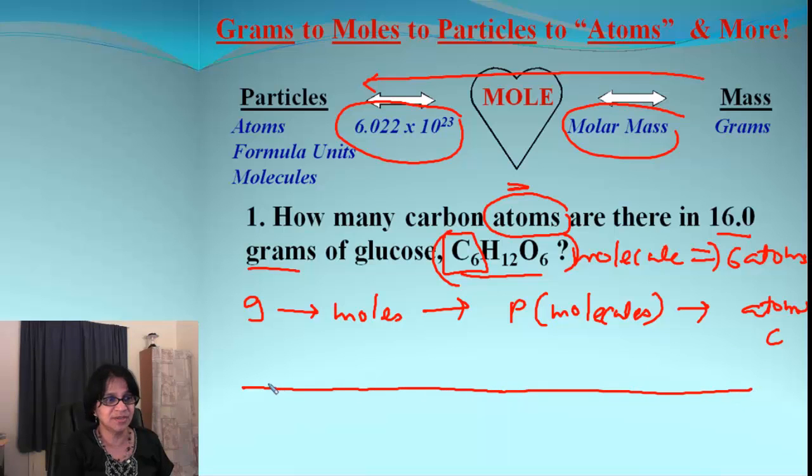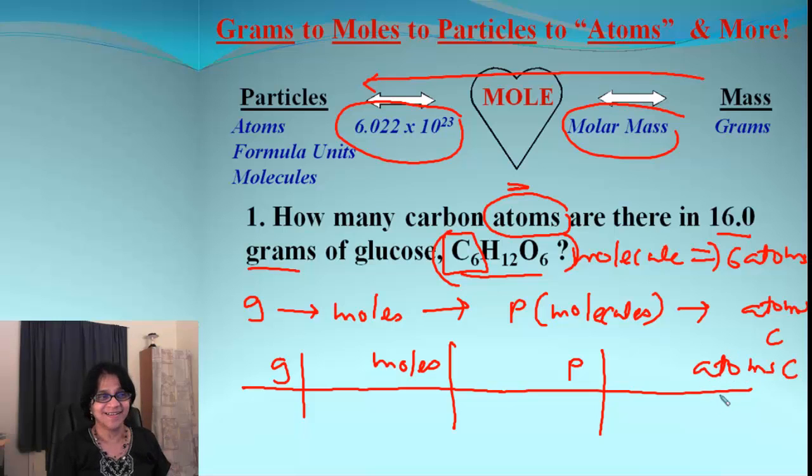So, let's put all that in our grid. That's grams, moles, that's particles and that's atoms of carbon. Given to us this is 16.0 grams. And now, already you know, grams should come here. Moles should be diagonally across and particles should be diagonally across from here.